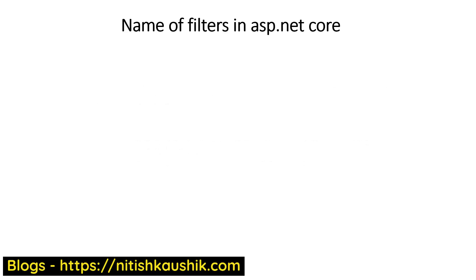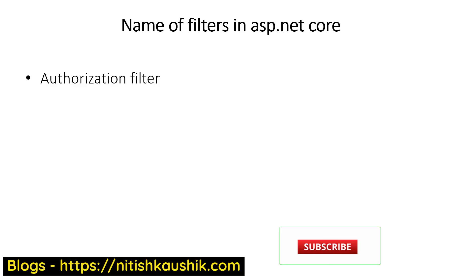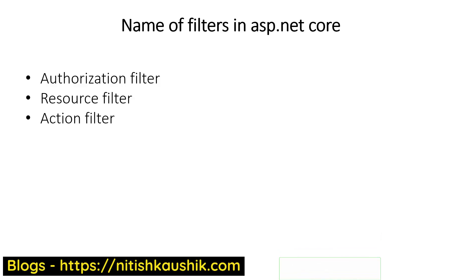Now let's see what filters are available in ASP.NET Core. The first filter is authorization filter, the second is resource filter, the third is action filter, the fourth is exception filter, and the last one is result filter. So in ASP.NET Core there are five filters.